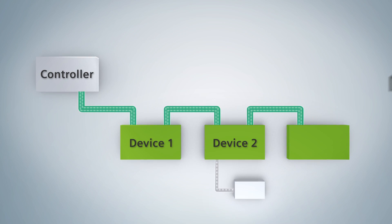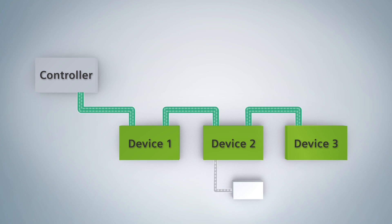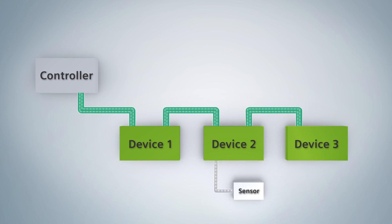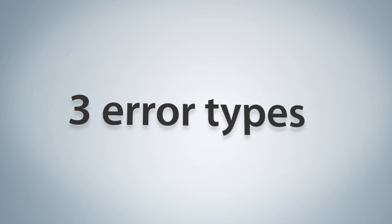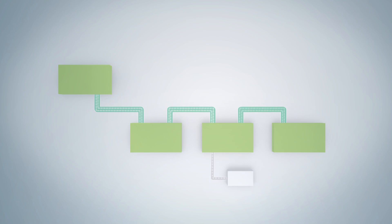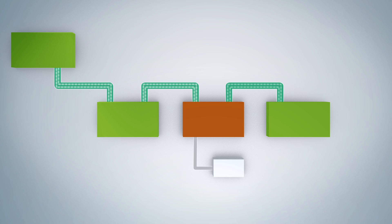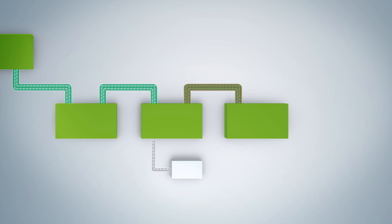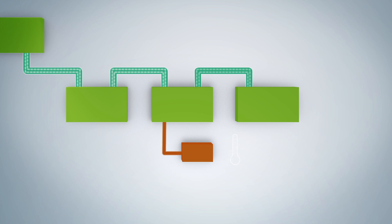Controllers and devices exchange I.O. data cyclically. Process values are captured by sensors. Essentially, errors can be divided into three different categories: device errors, network errors, and process errors.